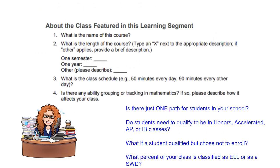This section moving forward talks about the name of the course and the length of the course — again, these are really brief answers. What's the class schedule like? How often does the class switch around? But the fourth prompt is really the most detailed: is there ability grouping or tracking in math? If so, please describe how it affects your class. You have to explain how students were put into your class — is there just one path for mathematics, do students need to qualify, is there some kind of criteria for honors, accelerated, AP, or IB classes? You could also make a general statement about the diversity of learners in your class — what percentage are classified as ELL or as a student with a disability, and how you support all learners.